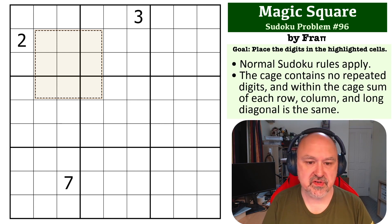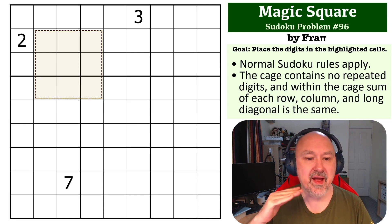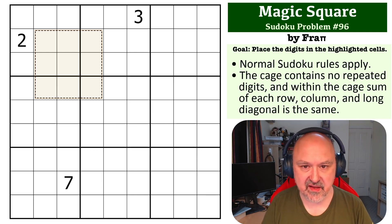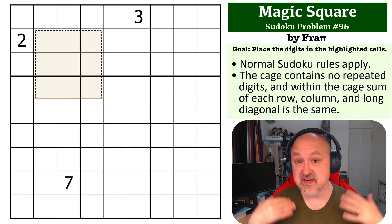Now, the rules on this one, apart from the normal Sudoku rules, is that the cage, which is the highlighted square, can contain no repeated digits, and each row, column, and long diagonal in that cage must contain the same sum.